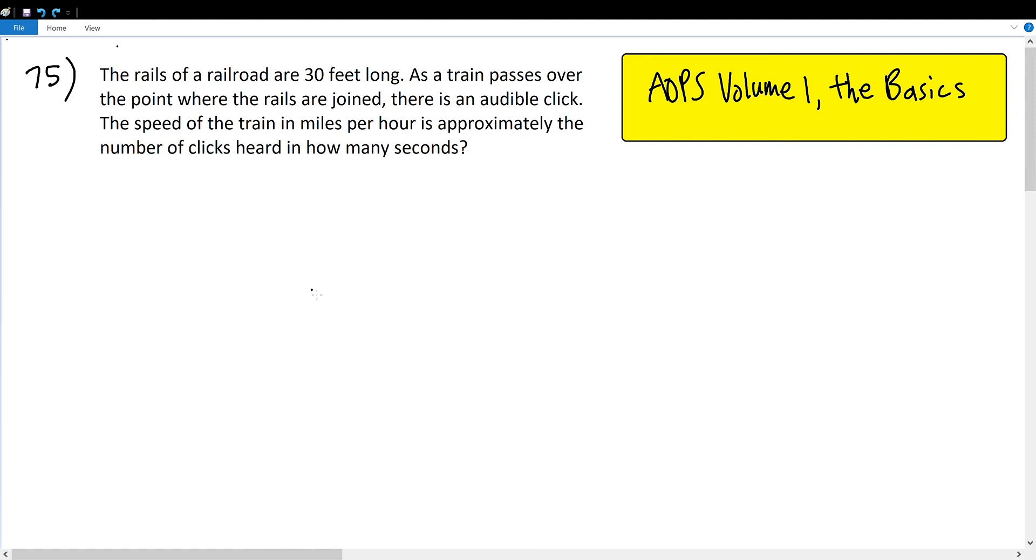AOPS Volume 1, the basics, number 75. The rails of a railroad are 30 feet long. As a train passes over the point where the rails are joined, there is an audible click. The speed of the train in miles per hour is approximately the number of clicks heard in how many seconds?